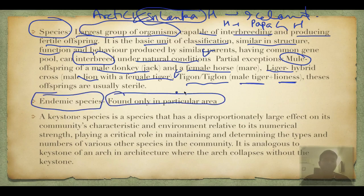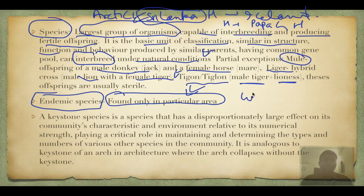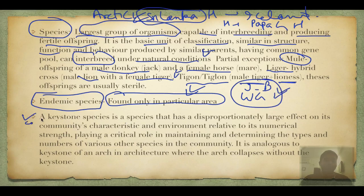Endemic species — endemism means local. They are found only in a particular area. India has two endemic hotspot areas: the Indo-Burma hotspot (including Himalayas and Northeast region) and the Western Ghats. These two hotspots have a high degree of endemism.